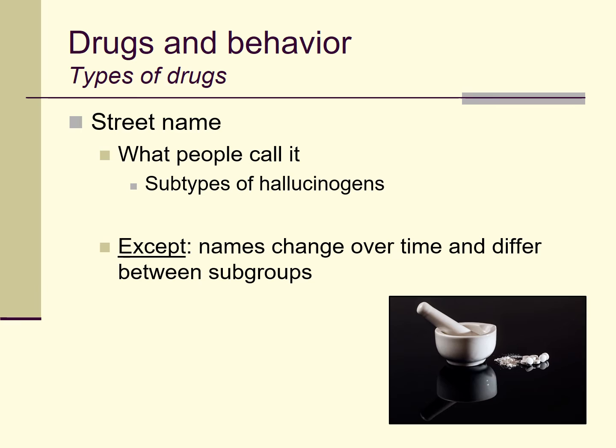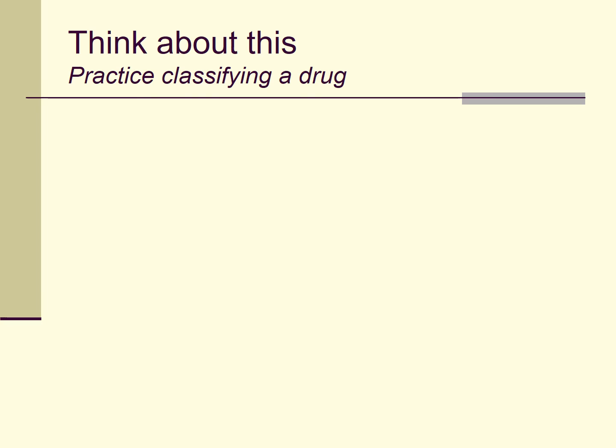So the point of all this is: classification is important for science. We probably need to do it. There are different ways to classify drugs, but no way is exactly perfect. Here's some practice: imagine you're confronted with a new drug as a researcher, police officer, or healthcare provider. Its appearance is a crystalline powder. It can be administered in a number of different ways — snorted or inhaled by smoking.